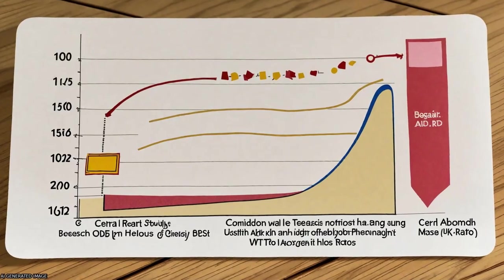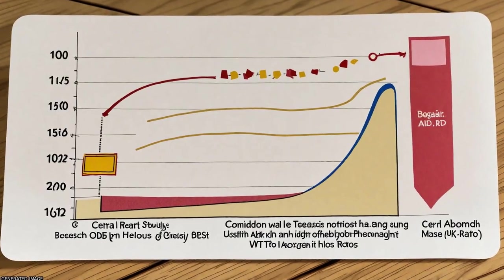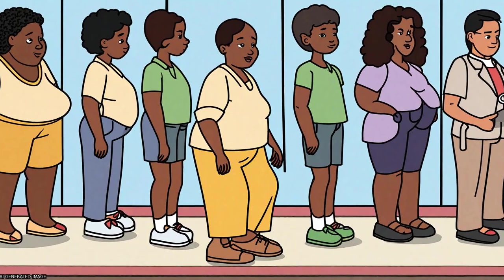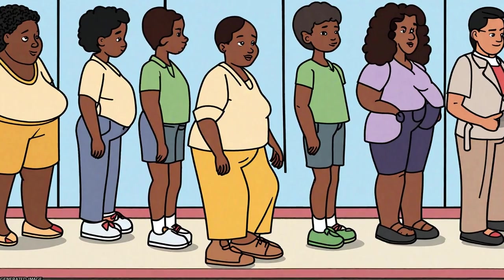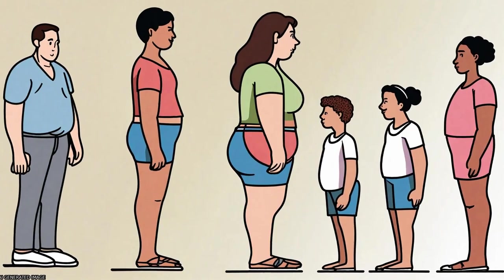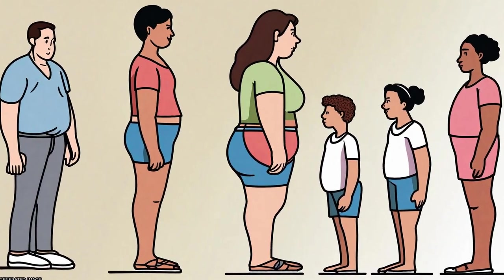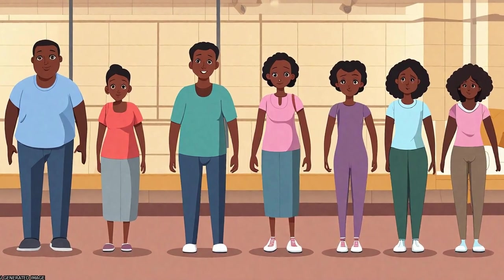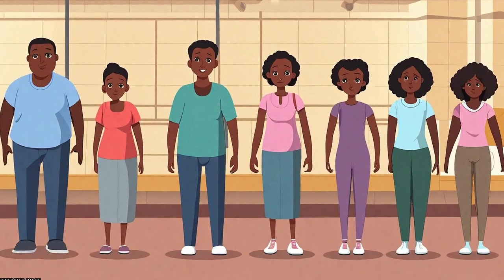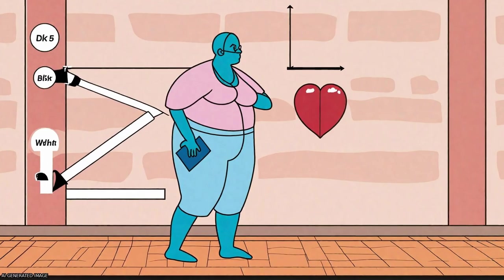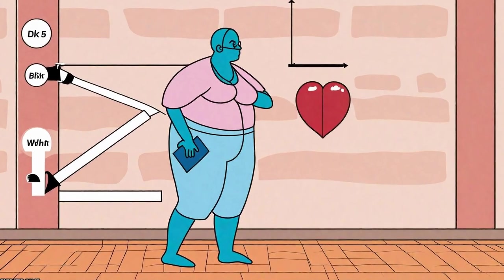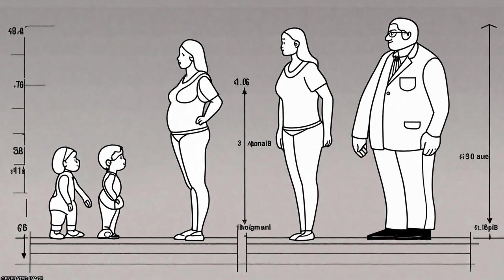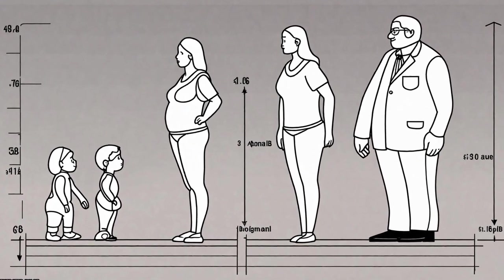The study used cross-sectional data from 3,091 black and white children aged 4 to 18 years, with information on various cardiometabolic risk factors. Children were classified as normal-weight or overweight/obese based on age-, race-, and sex-specific BMI percentiles.